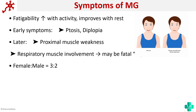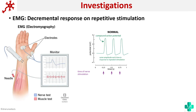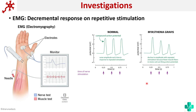So how do we investigate such a case? One important investigation is electromyography. In EMG, we basically stimulate a muscle. When we do this test, we see a decremental response on repetitive stimulation. As you can see in this image, on repeated stimulus a normal action potential is produced for each stimuli in a normal person. But in myasthenia gravis, with each stimulus you can see that there is a decrease in the response — that is the characteristic finding in EMG, a decremental response.